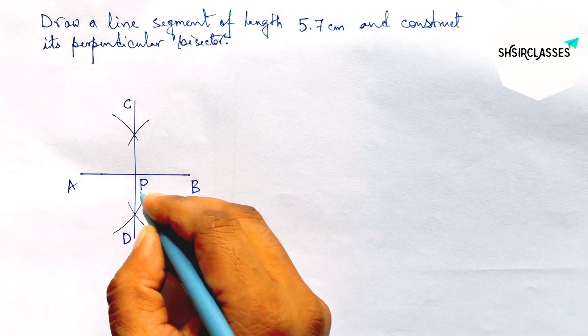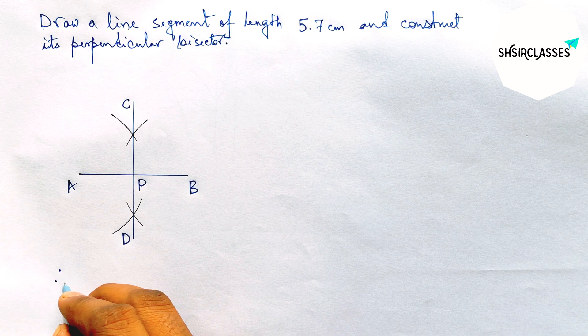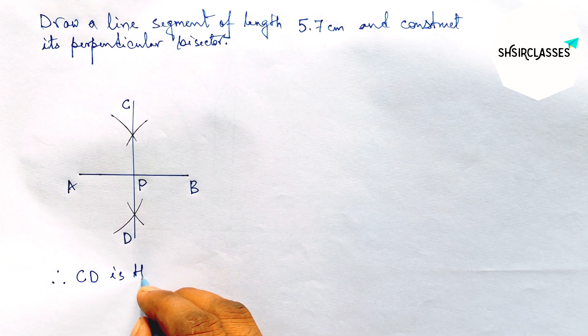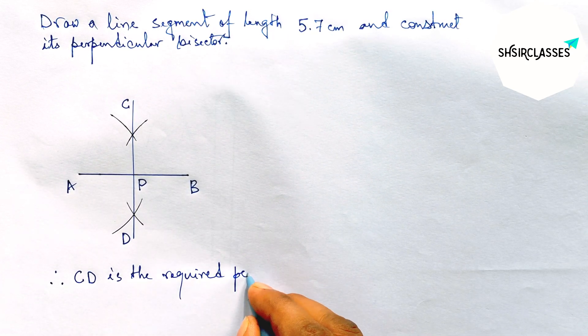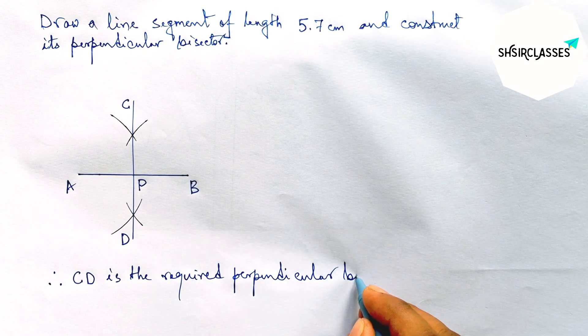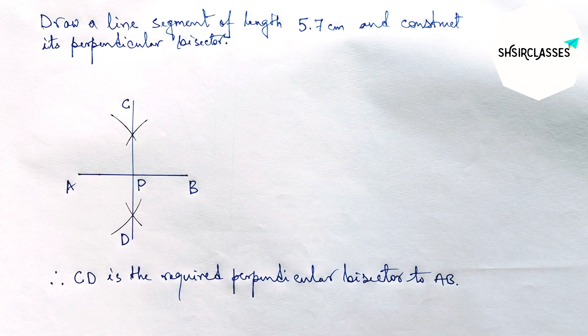Therefore, CD is the required perpendicular bisector to the given line AB. And by this way you can construct a perpendicular bisector to a given line.